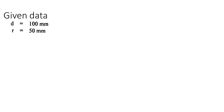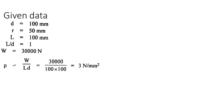Diameter = 100 mm, so radius r = 50 mm. Length l = 100 mm. Since l = 100 and d = 100, l/d = 1, so refer to Table 16.1 using l/d = 1. Load w = 30 kN = 30,000 N. Pressure p = w/(l × d) = 30,000/(100 × 100) = 3 N/mm².